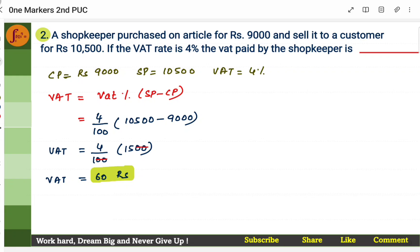Now let's look at the second problem. A shopkeeper purchased an article for Rs. 9000. So shopkeeper buys an article for Rs. 9000 and then he sells it to his customer at Rs. 10,500. And the VAT rate is 4%. You need to find the actual VAT that he is paying. Same thing. Selling price, he is selling it at Rs. 10,500. So selling price is Rs. 10,500.